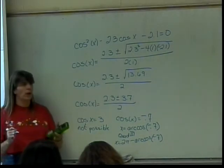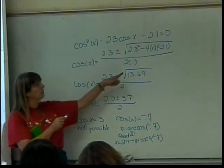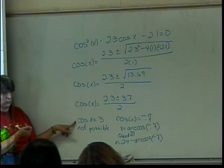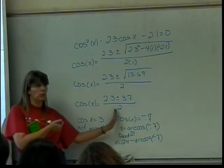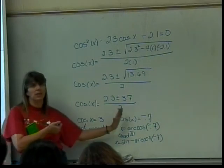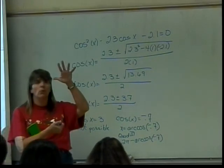So those are our two possibilities for x. Notice there are only two because although I had both a positive and a negative, the positive one was not possible, but the negative one was. So that's why there are only two answers to it. If I end up with a positive one that's possible and a negative one that's possible, then I can end up with four answers. Sometimes I can end up with five.